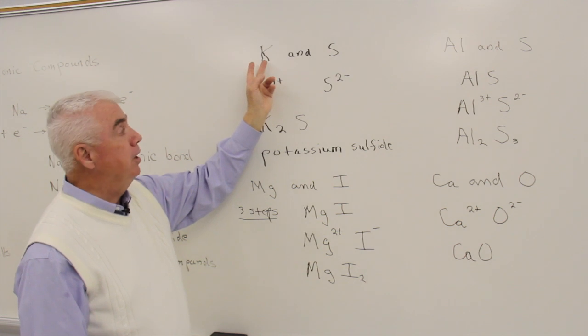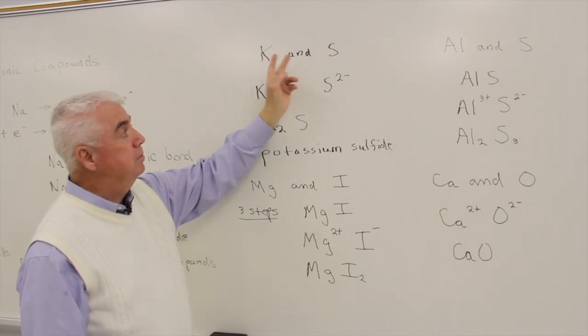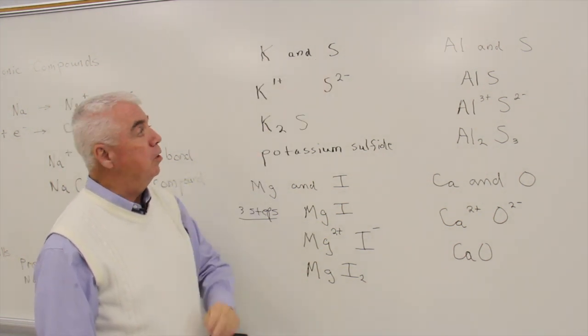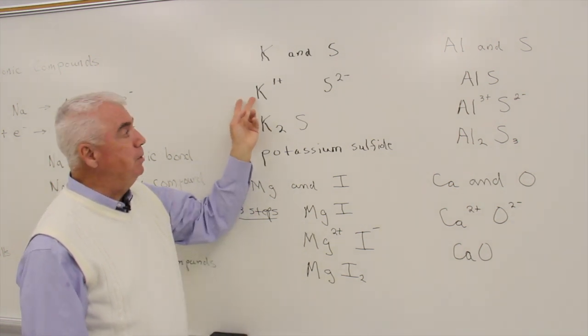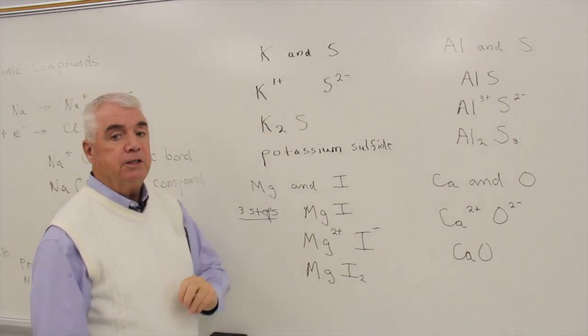We've got a metal, an element on the left of the periodic table, a nonmetal, element on the right-hand side. We know that metals tend to give up electrons, that nonmetals tend to take them on.